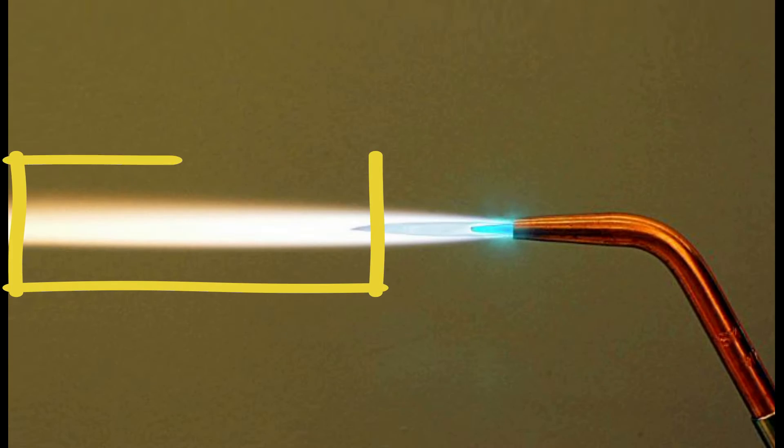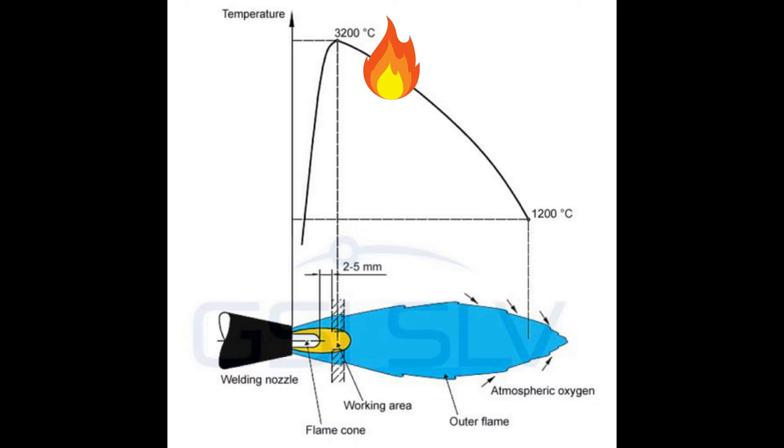In the outer flame, the complete combustion of the gas takes place with oxygen from the air. The maximum temperature is approximately 3200 degrees Celsius at a distance of 2 to 5 millimeters after the flame cone.